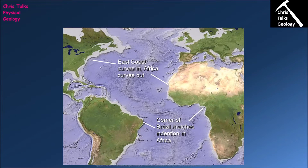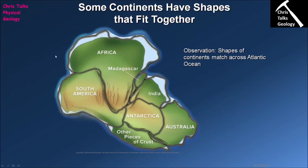This jigsaw fit works particularly well for the southern hemisphere continents especially. If we go on to the next slide, we can see our southern hemisphere continents: Africa, South America, India, Antarctica, Australia, and a few other pieces of crust. If we take these pieces of crust and cut them out from a map, we can actually move these landmasses around and make them fit together really very nicely. You can see that the eastern coast of Antarctica would actually slot into the southern coast of Australia quite nicely.